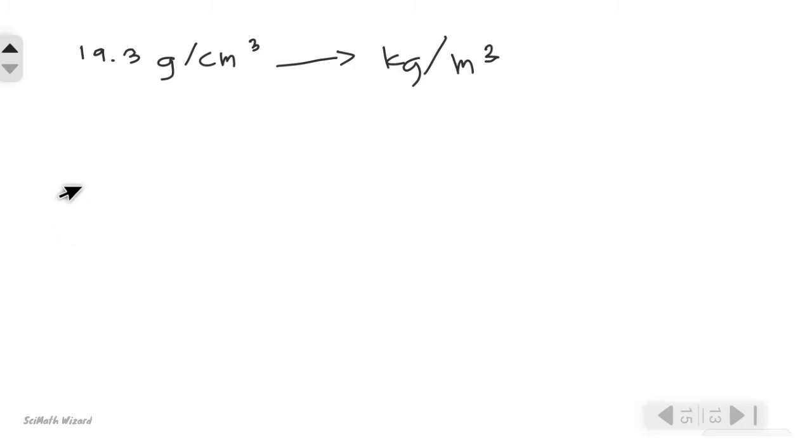Let's write it down. First, the given, which is 19.3 grams per cubic centimeter. From our conversion factor, in order to cancel out the gram and convert that into kilogram, we know that one kilogram is equivalent to one thousand grams. From here, we can cancel out the grams and we're left with kilograms.